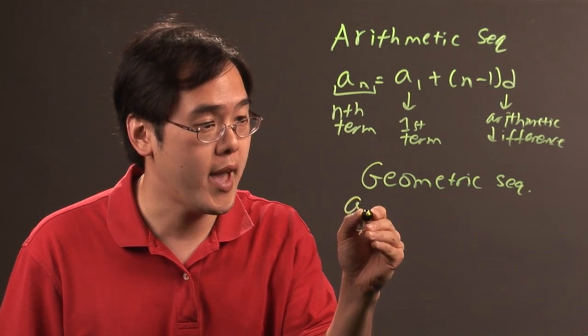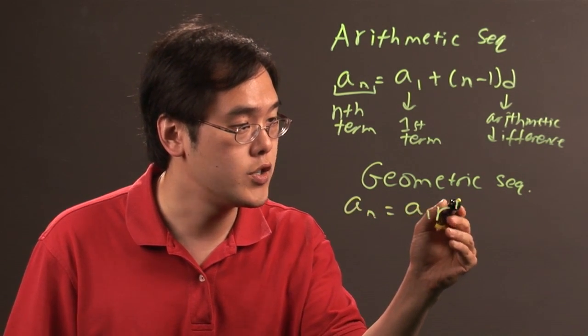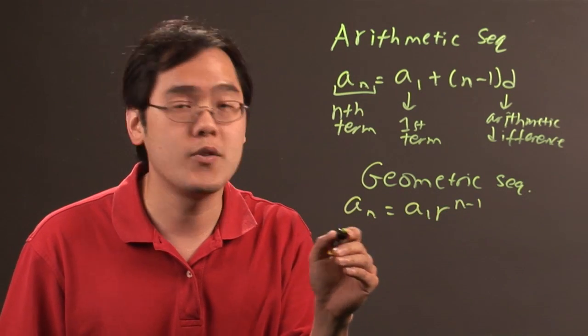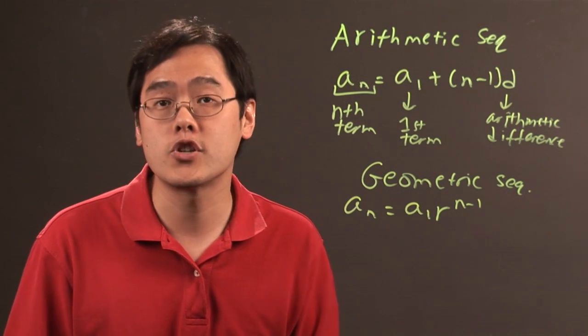So, the formula associated with that would be an is equal to a1 r to the n minus 1. A little bit shorter, if you will. an is if you want to find the nth term of a geometric sequence. a1 is the first term again.